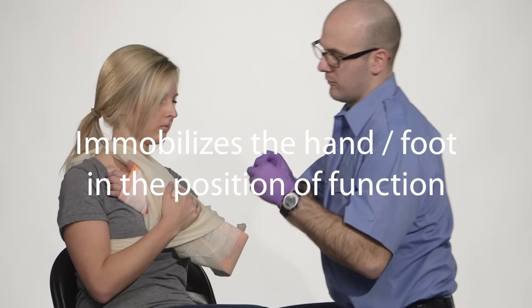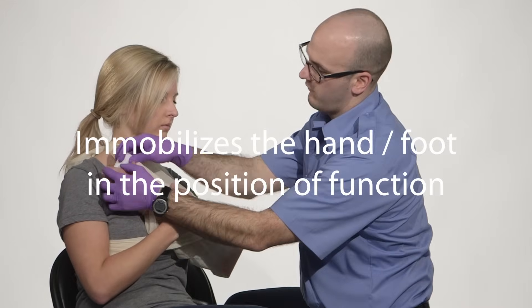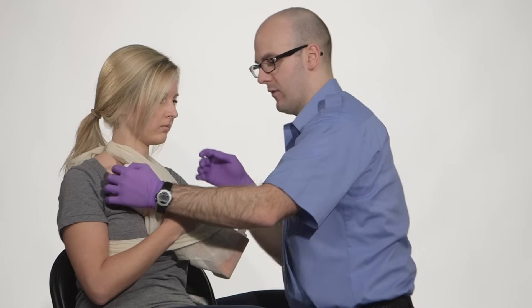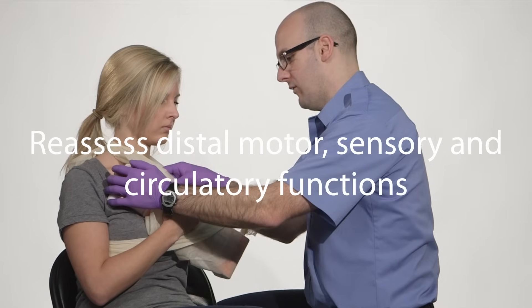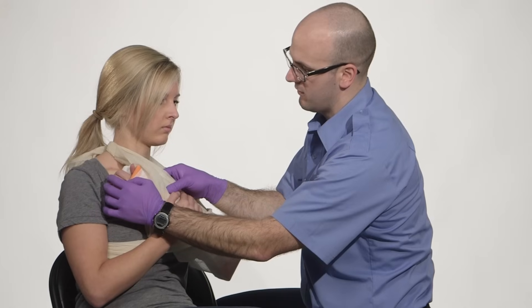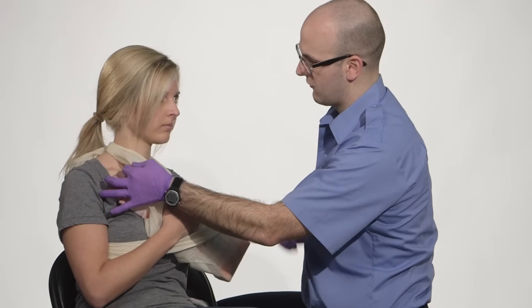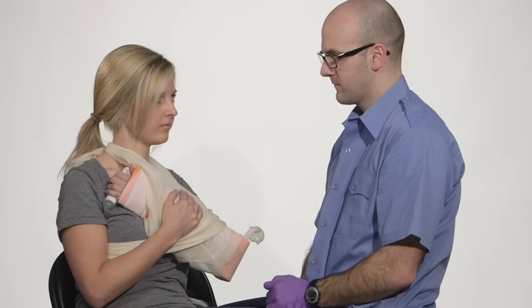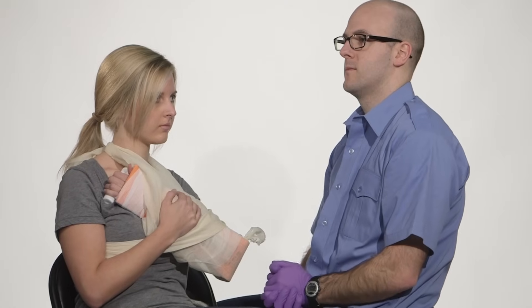Last thing I'm going to do is splint the hand in a position of function and then reassess CMS. So we'll feel for a pulse. I still have a pulse. Can you wiggle your fingers for me? And then can you feel me touching you? Motor, sensory, and circulatory functions are present and normal.